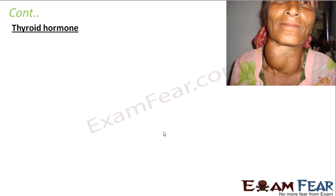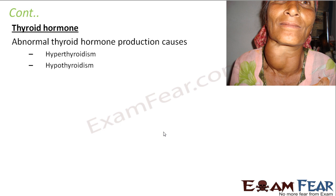Let us look at another hormone: the thyroid hormone. You would have heard people saying someone is suffering from a thyroid problem and gaining or losing weight. The thyroid gland secretes the thyroid hormone, thyroxine. Abnormal thyroid hormone production can cause two situations: one is hyperthyroidism and the other is hypothyroidism. The weight gain or weight loss complaints people mention are all due to this abnormal secretion — either too much (hyperthyroidism) or too little (hypothyroidism).